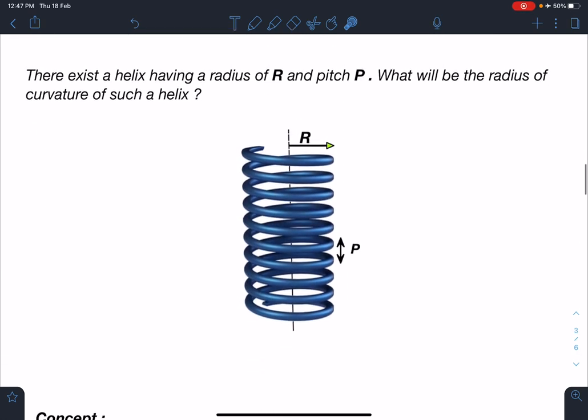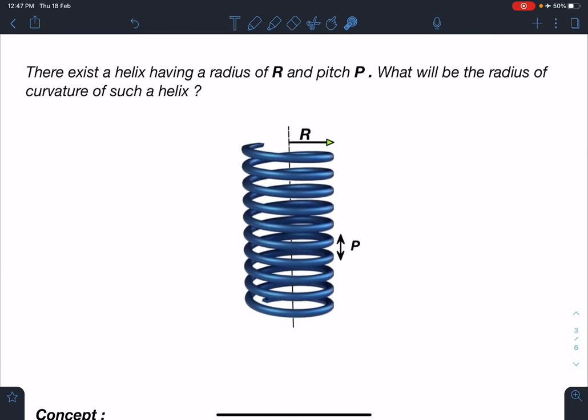Here is the statement of this problem: there exists a helix having radius R and uniform pitch P. What will be the radius of curvature of such a helix? In the diagram you can see it's a uniform helix, meaning this spacing is the same everywhere.